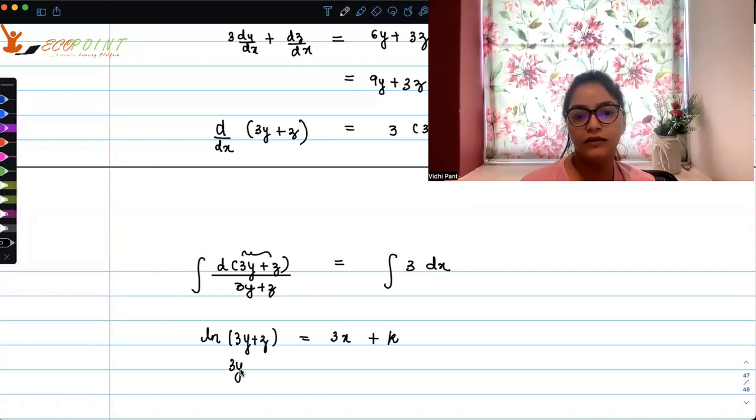In other words, taking exponential, 3y plus z is equal to k e to the power 3x.